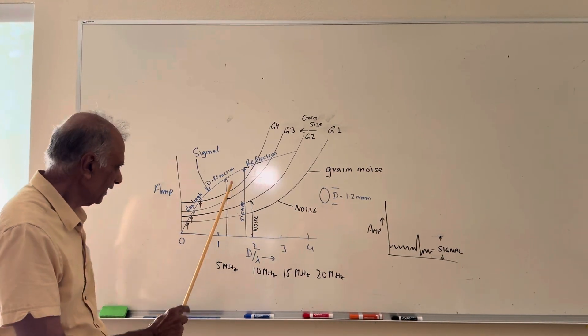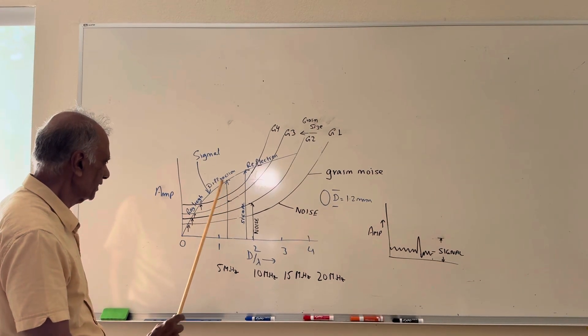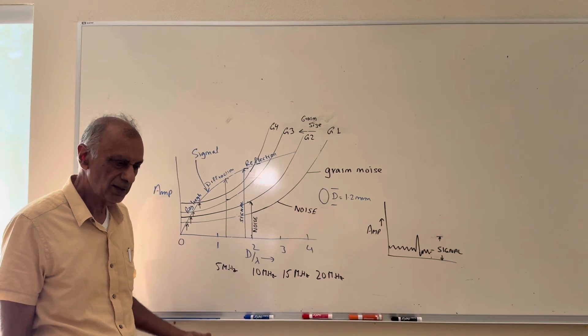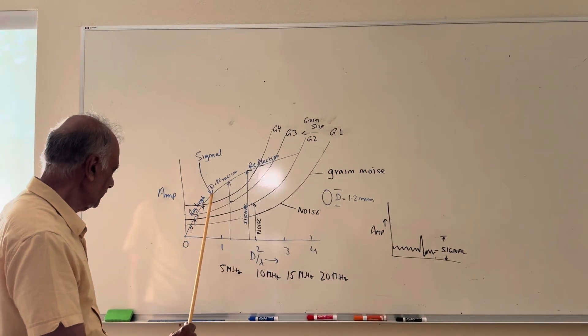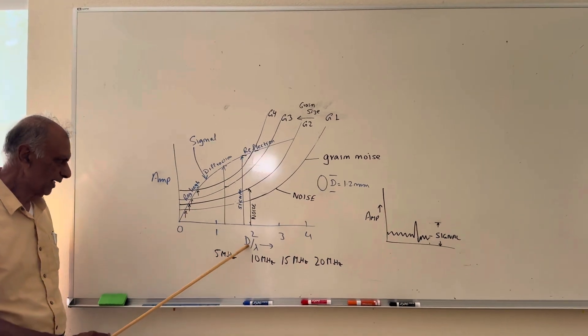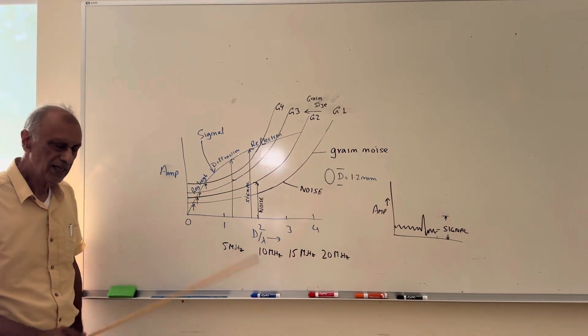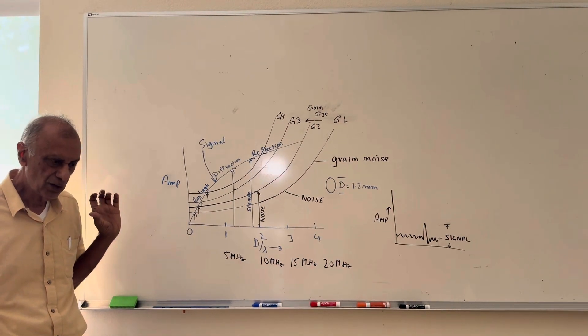But here, what we have is when D over lambda is close to one, we have diffraction effects, which is like the beam spread which we calculate in ultrasonic testing as lambda over D. And then when the D becomes quite small relative to the lambda, or lambda is much more than the D, then we are actually in the scattering zone where the sound is scattered from the reflector in all directions, compared to reflection here where the sound is reflected straight back to the probe.